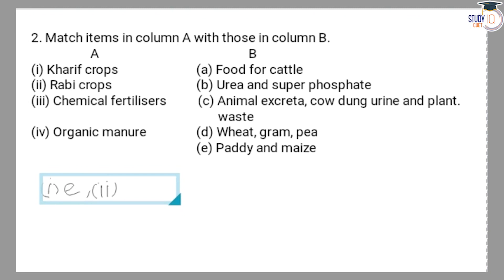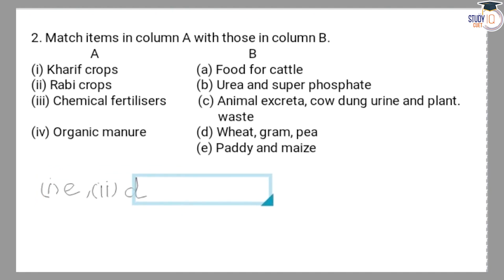The second one is Rabi crops. Similarly, Rabi crops are those crops which are grown in the winter season, for example wheat, gram, and pea. So the answer is (d).